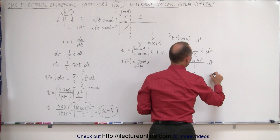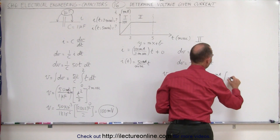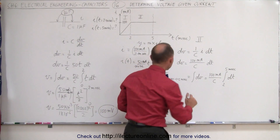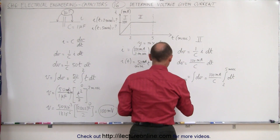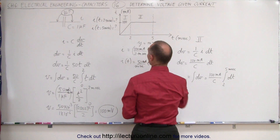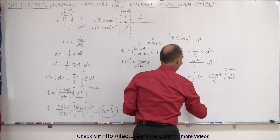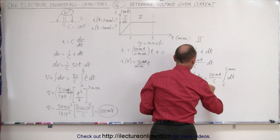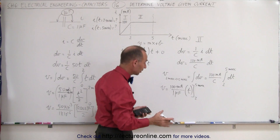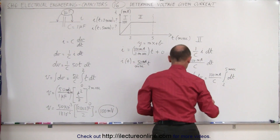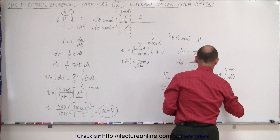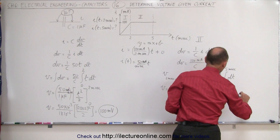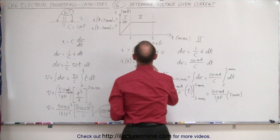This equals 100 milliamps divided by the capacitance times the integral of dT from 2 to 5 milliseconds. The integral of dT is simply T, so V equals 100 milliamps divided by 1 microfarad times T evaluated from 2 to 5 milliseconds. Plugging in the upper and lower limits gives a difference of 3 milliseconds, so this equals 100 milliamps divided by 1 microfarad times 3 milliseconds.